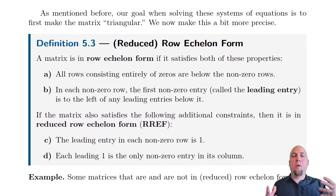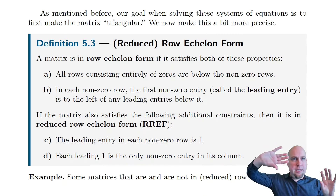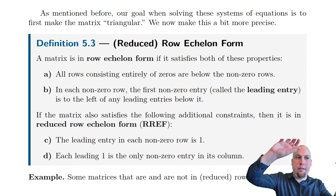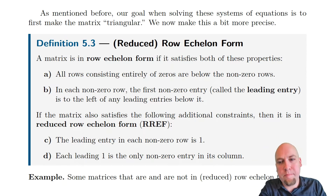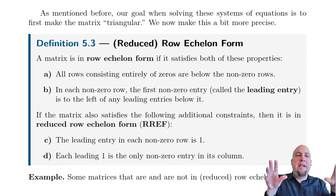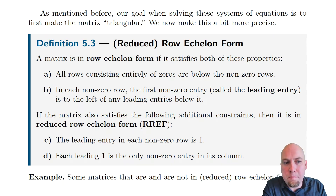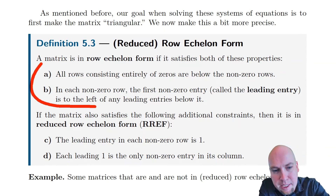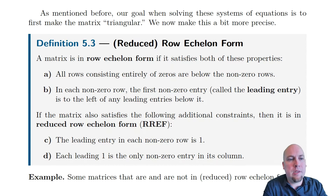The idea here is that row echelon form pins down this notion that we talked about in the previous video of a matrix or a linear system being sort of upper triangular — having this form that lets us do back substitution. In order for a matrix to have row echelon form, it has to have two properties. These properties A and B are what make something have row echelon form.